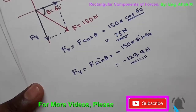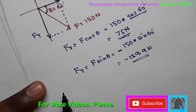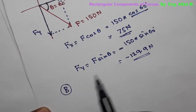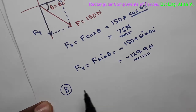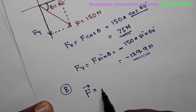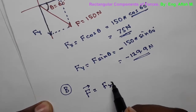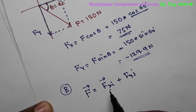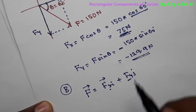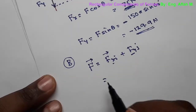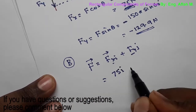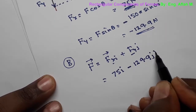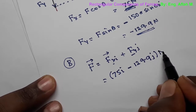In question B, we write the force F in vector form as F equals FX·i plus FY·j. Here FX is positive but FY is negative, so F equals 75i minus 129.9j Newtons.